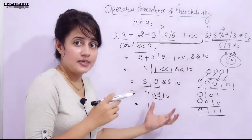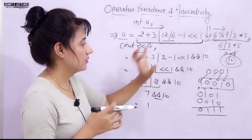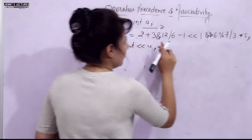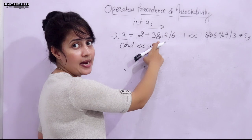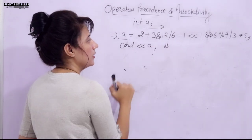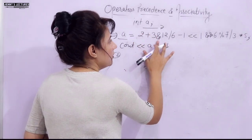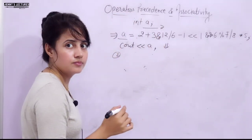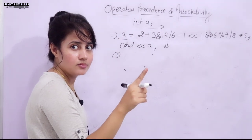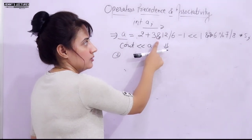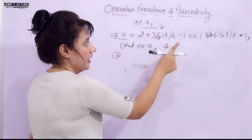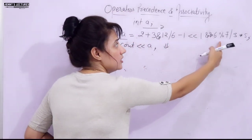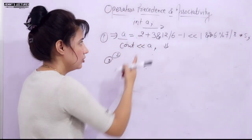Two assignment questions: First, solve the same expression but replace bitwise OR with bitwise AND — what is the output? Second, in the same expression (with bitwise AND), replace 3 with 8 — what is the output?